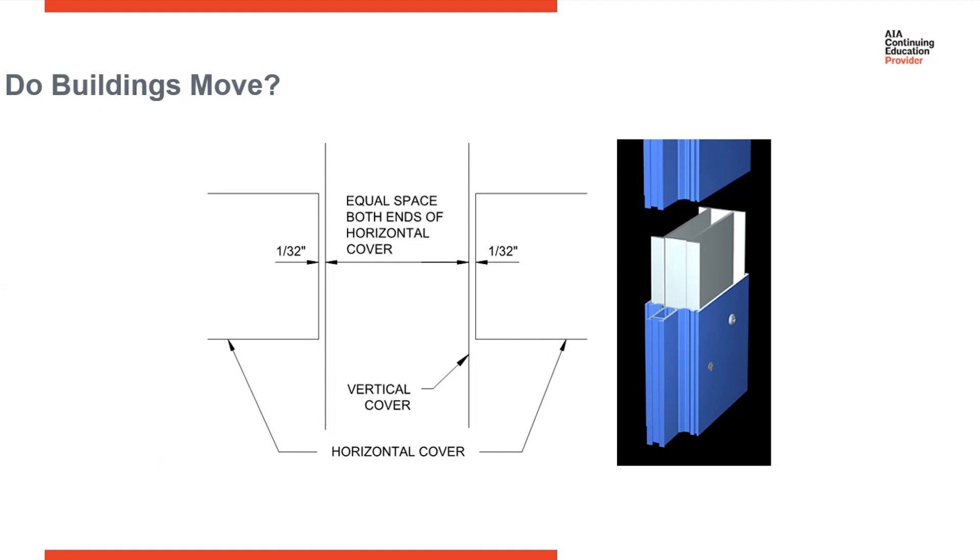On the right, we have a picture of a splice. Splice is allowed for vertical deflection. The upper section will hang from the floor above and fall over a splice sleeve, allowing the curtain wall mullions to accommodate for vertical movement.